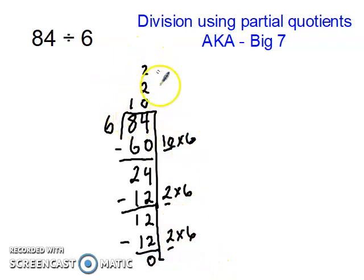I have all my partial quotients up here at the top. So the next thing I do is just add them together. So I have 10 plus 2 plus 2. I'll add that together: 10, 12, 14. That gives me 14. So 84 divided by 6 equals 14.